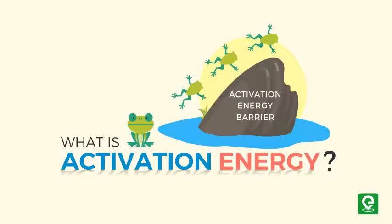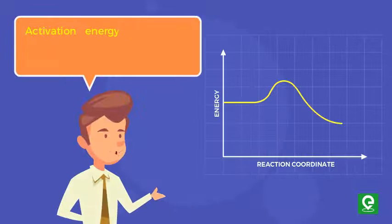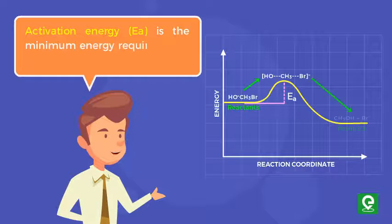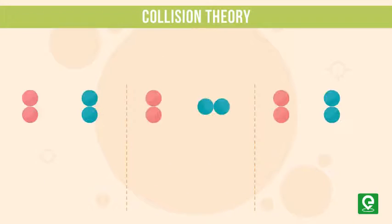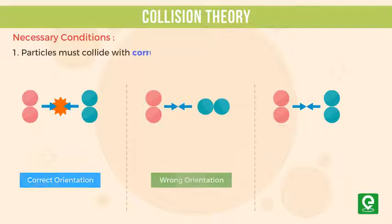What is activation energy? Activation energy is the minimum energy required for a chemical reaction to occur. According to collision theory, two conditions are necessary for a reaction to occur: one, particles must collide with correct orientation, and two, particles should have sufficient energy to break existing bonds and form new ones.